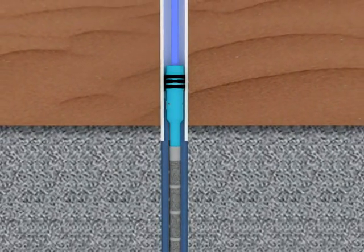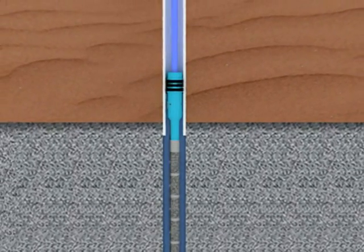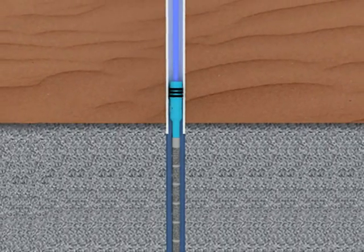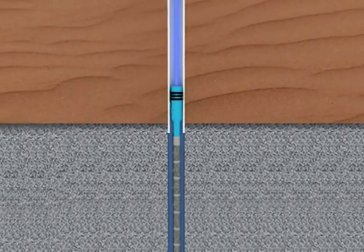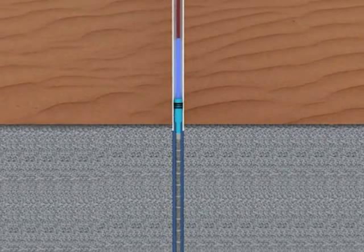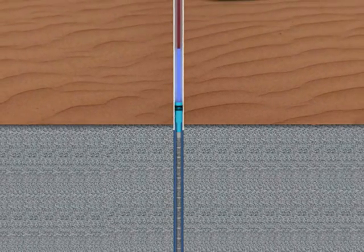The gravel setting tool is again installed inside the stop sand for the refilling of the annulus. Should any drop occur in the level of gravel in the annulus during the development, the easy reinstallation of the gravel setting tool allows the injection of additional gravel to refill the annulus.